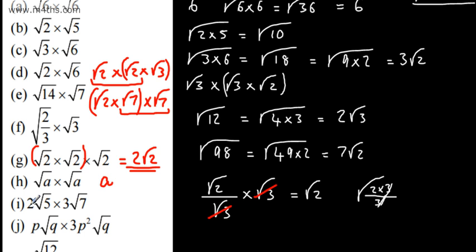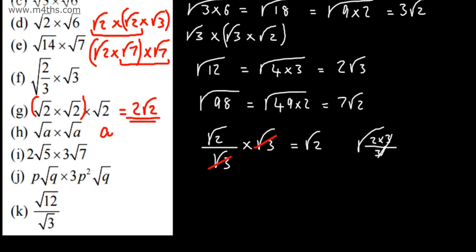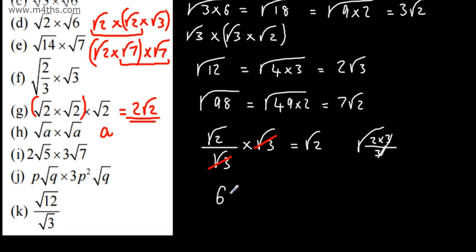Here, we've got 2 root 5 multiplied by 3 root 7. We first multiply the numbers on the outside, and then we multiply the surds. I like to do the 2 times by 3 first. So what we have then is 6 root 5 multiplied by the root of 7. Both 5 and 7 are prime numbers, so we simply multiply them: root A times root B is root AB. This gives me 6 root 35.